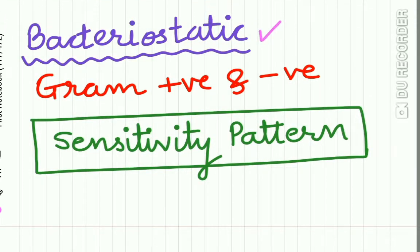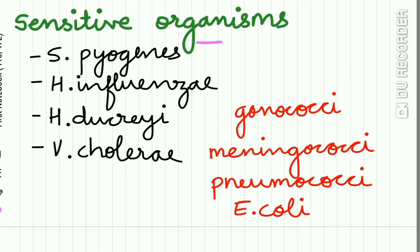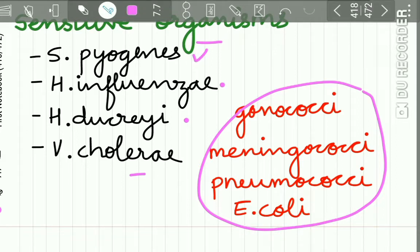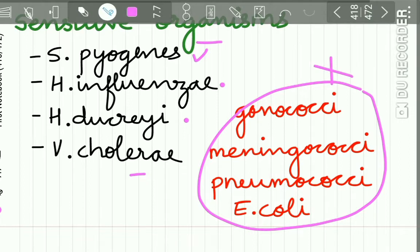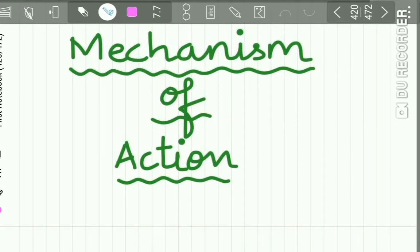Sulfonamides are mainly bacteriostatic and are effective against a variety of gram positive as well as gram negative organisms. Sensitivity patterns have changed from time to time and place to place. Sensitive organisms include Streptococcus pyogenes, Haemophilus influenzae, Haemophilus ducreyi, and Vibrio cholerae, and a few gonococci and meningococci. E. coli are sensitive to sulfonamides but the majority of this group is not. Anaerobic bacteria are all resistant, while Chlamydia, Nocardia, and Toxoplasma are sensitive.